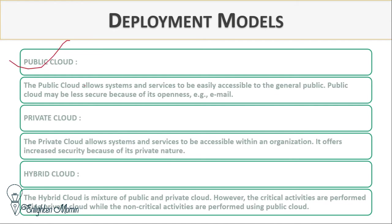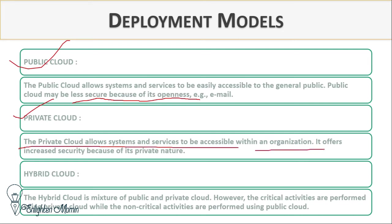Public cloud: the public cloud allows systems and services to be easily accessible to the general public. It may be less secure because of its openness — for example, Gmail or email. Private cloud: the private cloud allows systems and services to be accessible only within an organization, offering increased security because of its private nature.